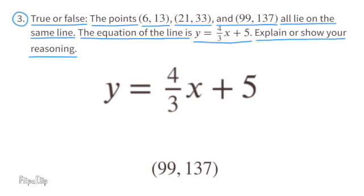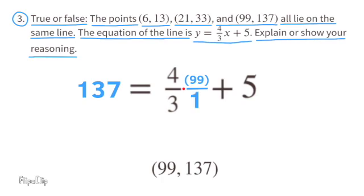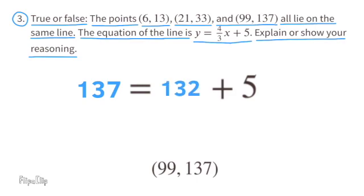For the third point (99, 137): substitute x with 99 and y with 137. 4 thirds times 99 over 1: 4 times 99 is 396, and 396 divided by 3 equals 132. 132 plus 5 is 137, and 137 equals 137, so this is also true.